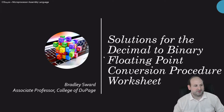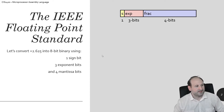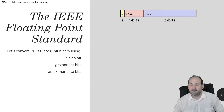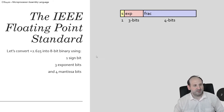So just for example here, we're trying to convert positive 2.625 into 8-bit binary using 1 sign bit, 3 exponent bits, and 4 fractional bits.